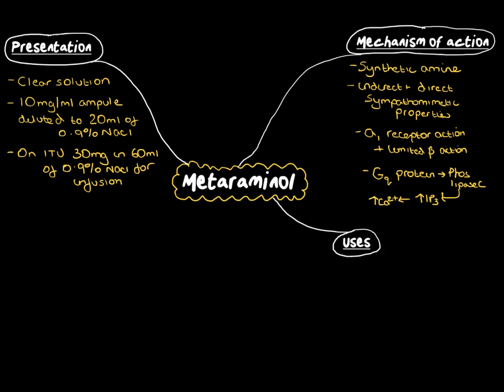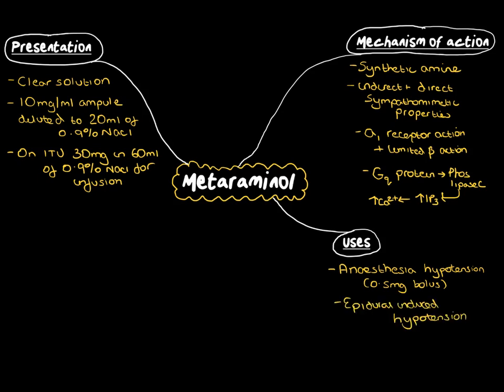Metaraminol is often used for the control of anaesthesia-induced hypotension, normally as a 0.5 mg bolus, or essentially a 1 mL bolus of your normally prepared syringe. It's also frequently used for epidural-induced hypotension. On the ITU, it can be used in the management of blood pressure where you only have peripheral access, or you're trying to be sparing with your use of NORAD.